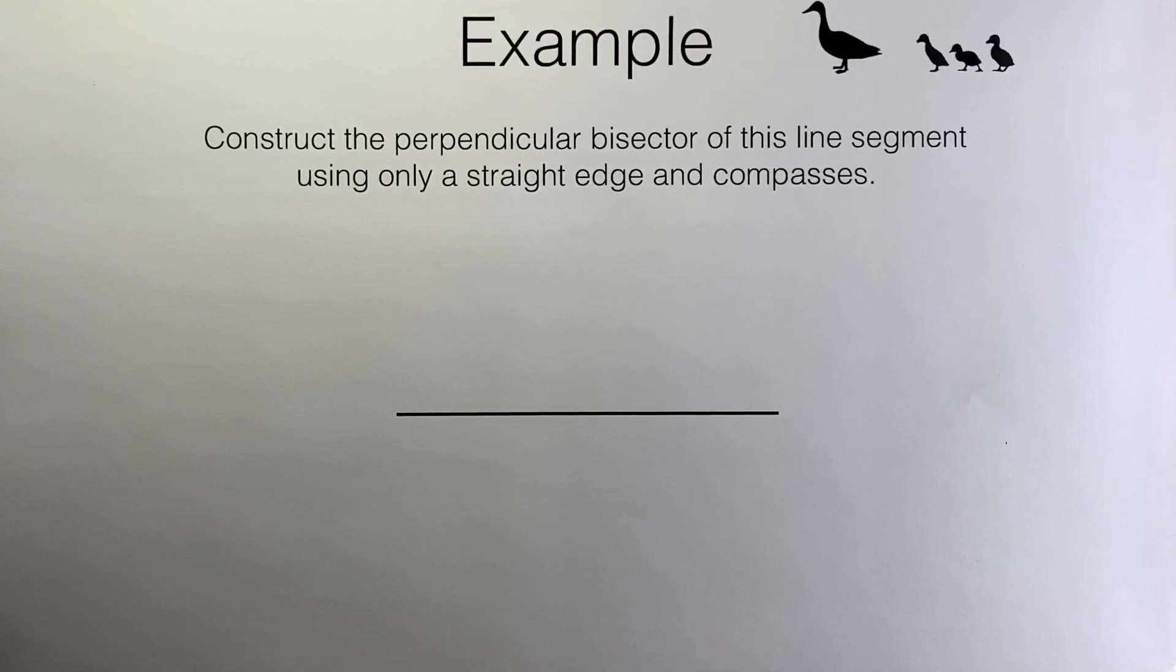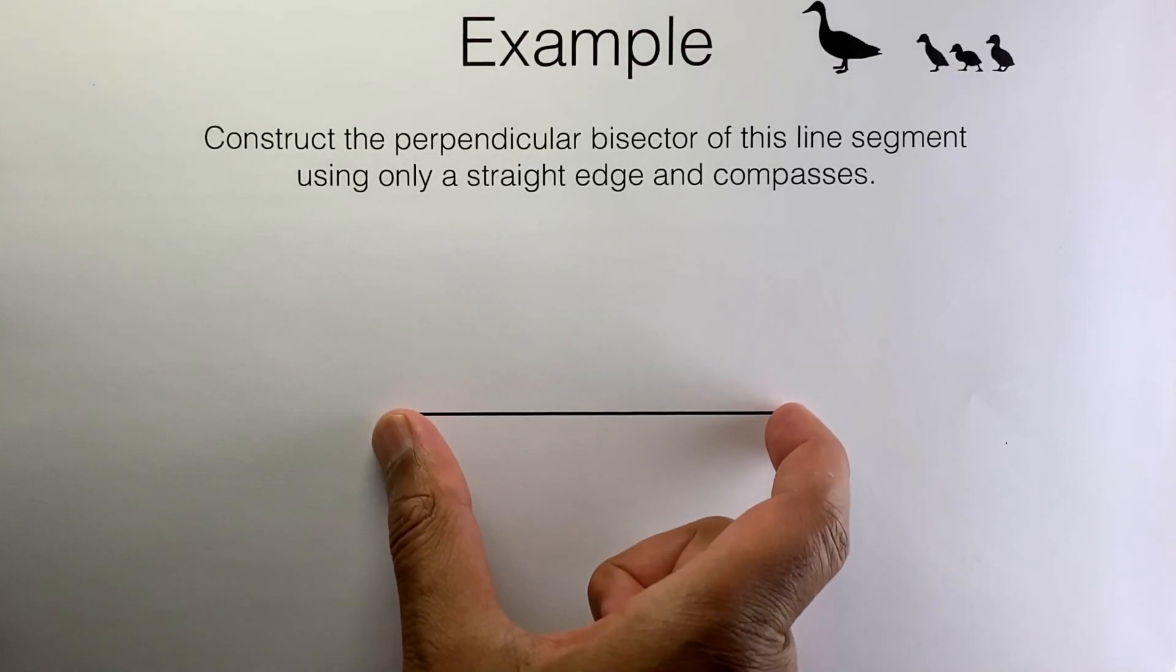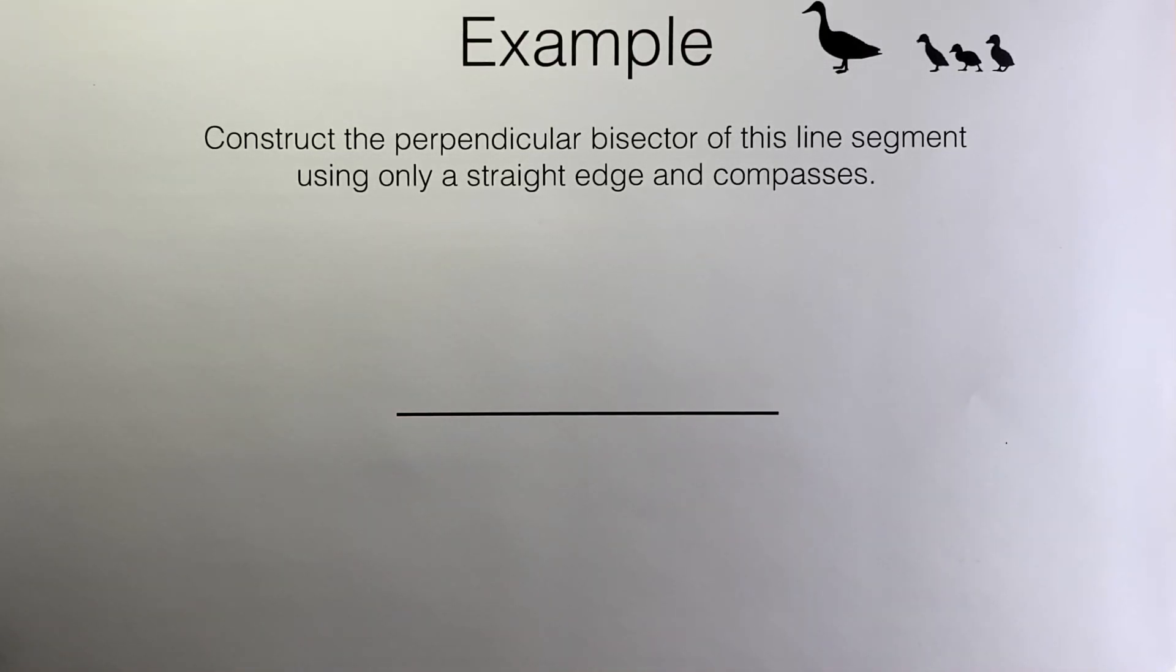In this video we are constructing the perpendicular bisector of a line segment. A bisector cuts an object into two equal parts, so by constructing a bisector here we will be splitting this line segment into two halves.